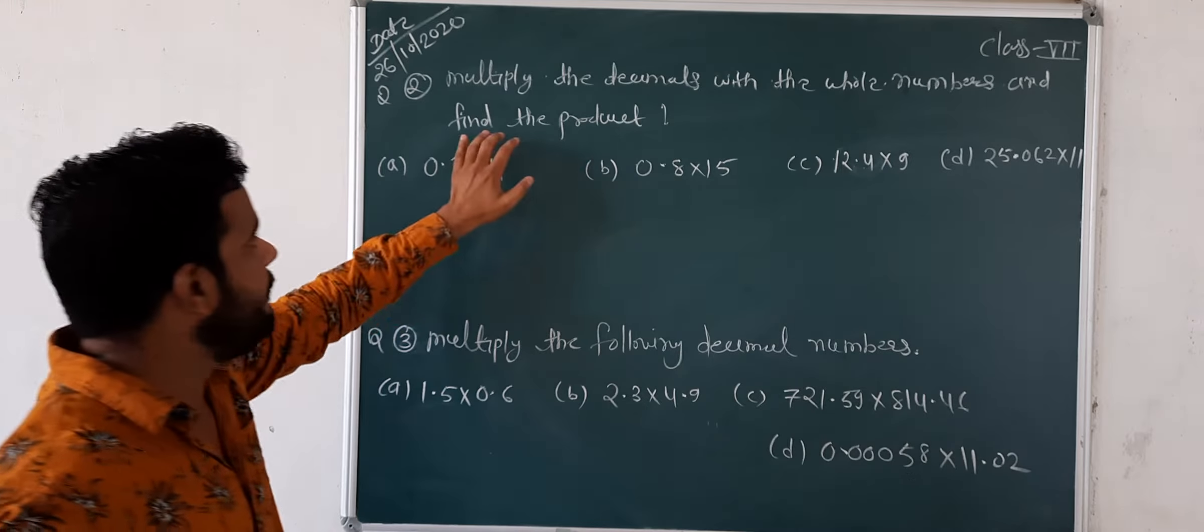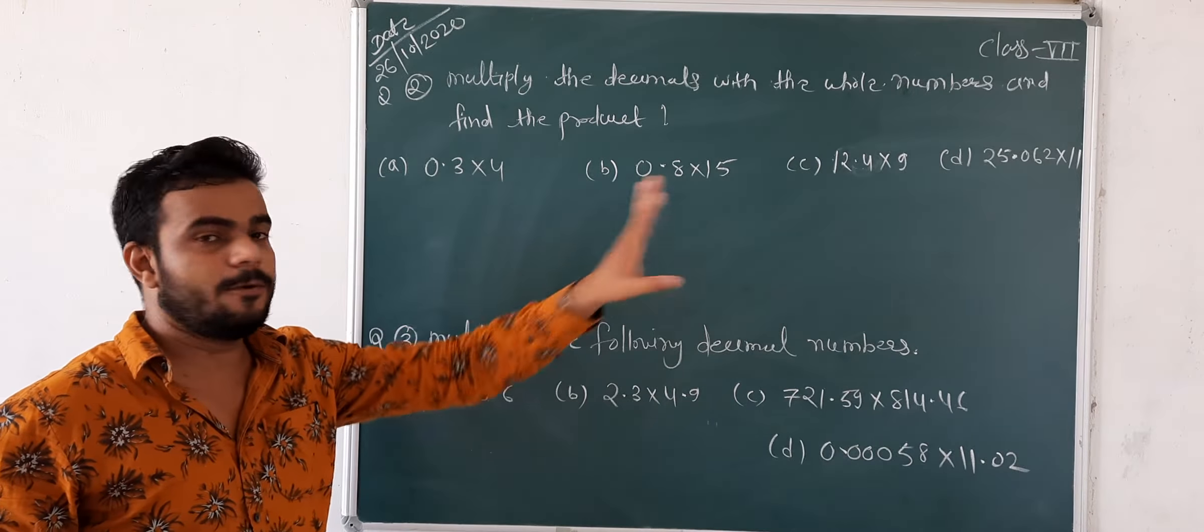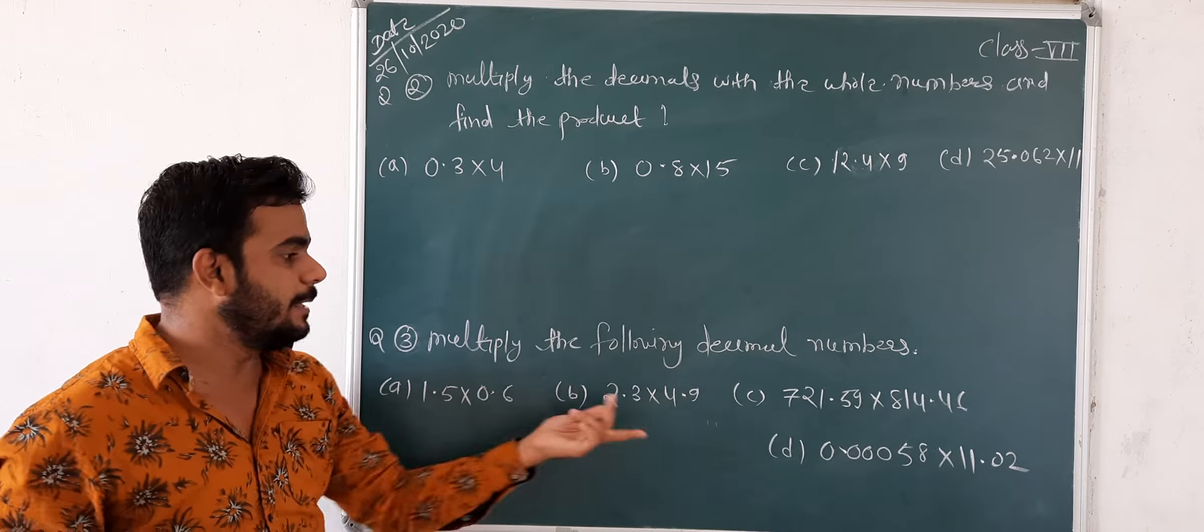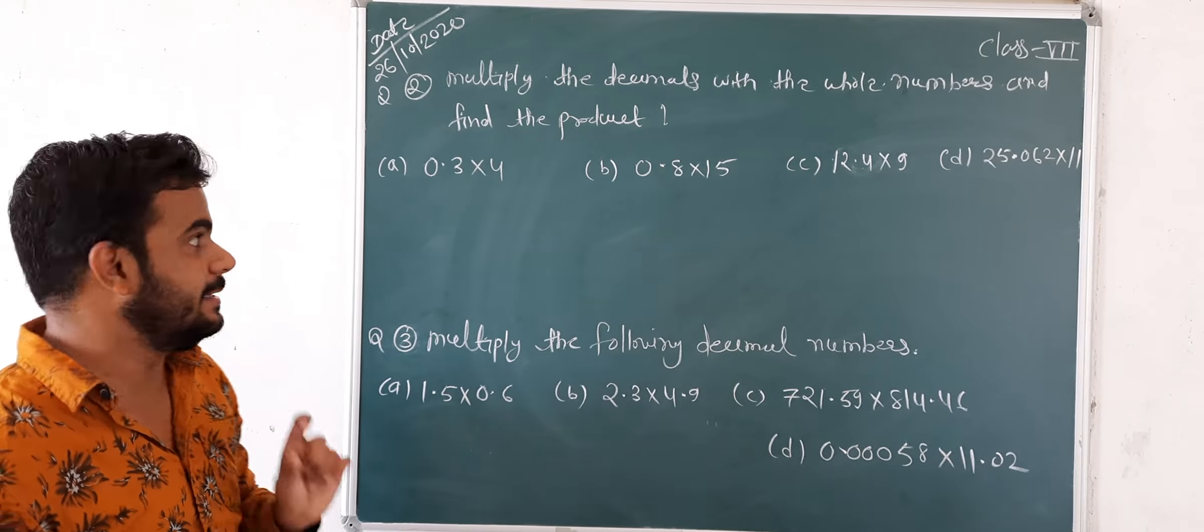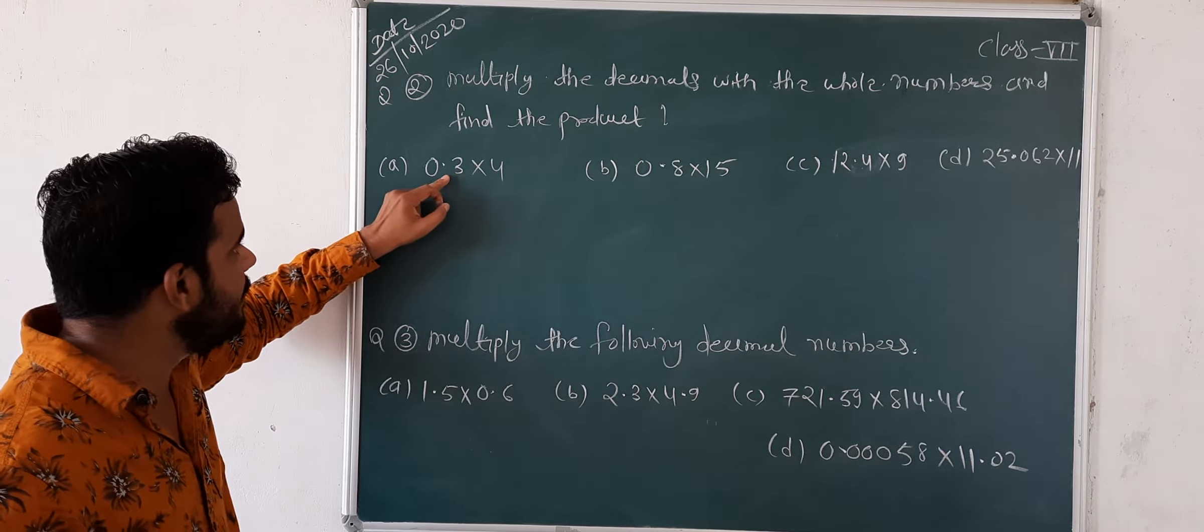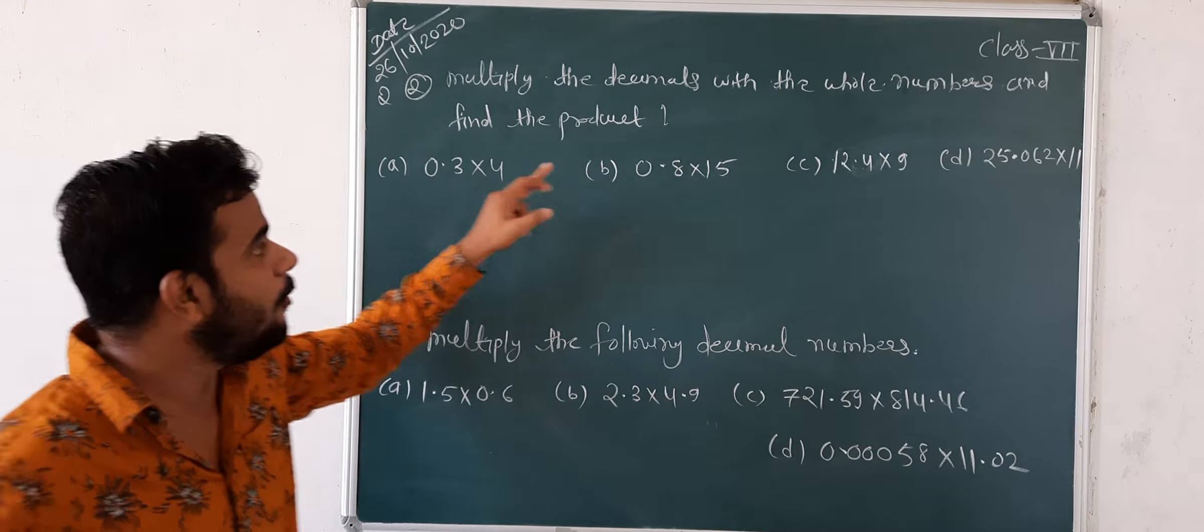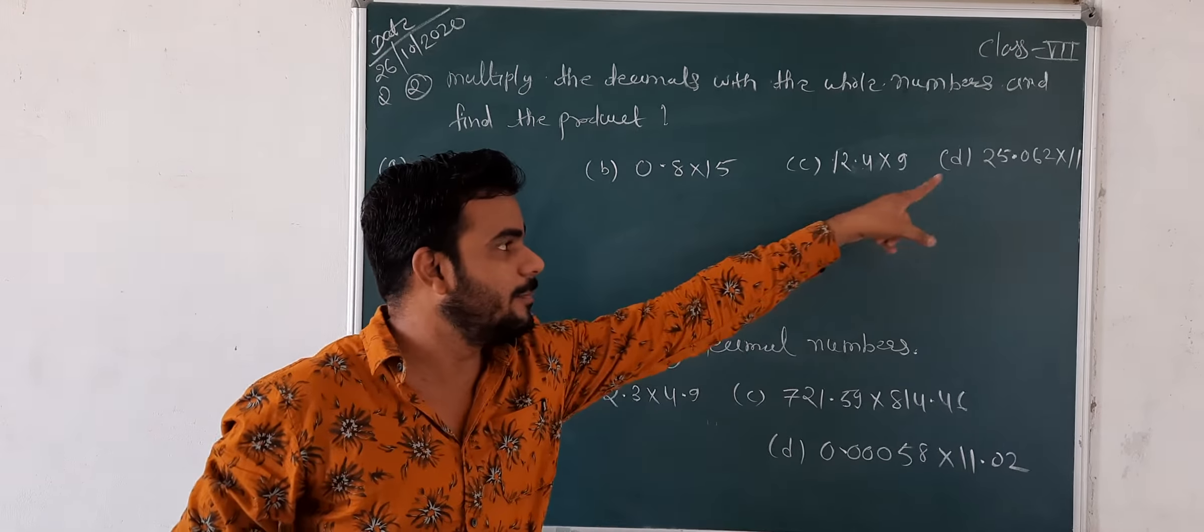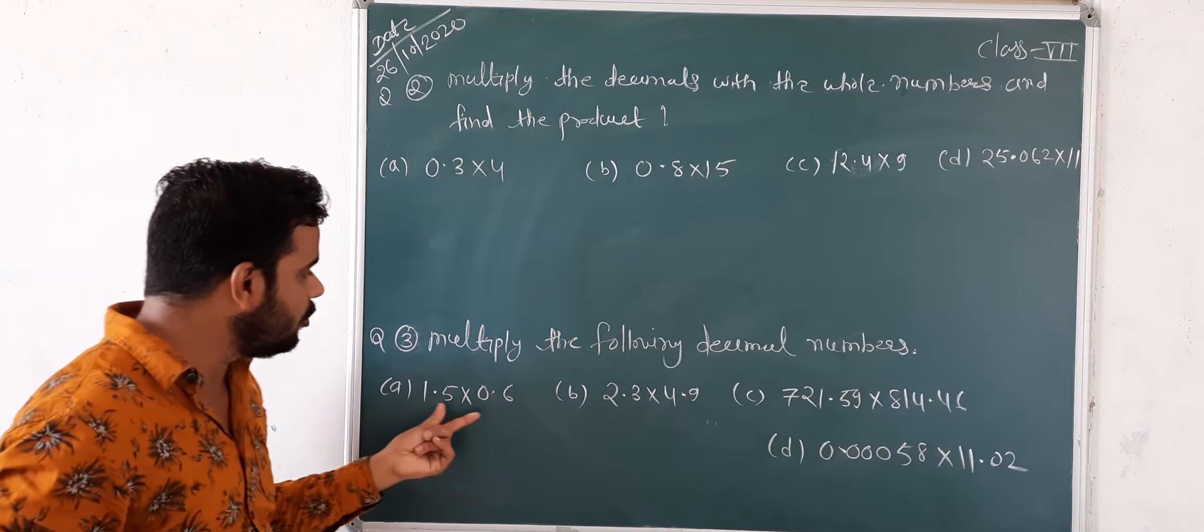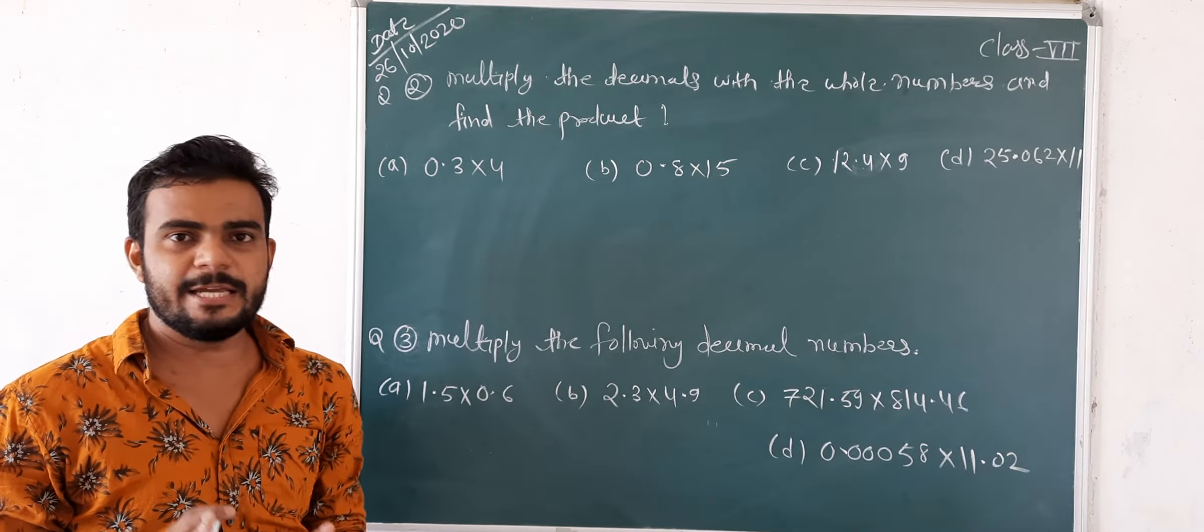Next, 7.9 x 100. Two places, so two zeros. Point moves two places. 790.0. Next, 10.05 x 100 equals 1005.0. Three places, so three zeros. This is the way to solve direct multiplication of 10, 100, 1000. Take the screenshot and write in a notebook.